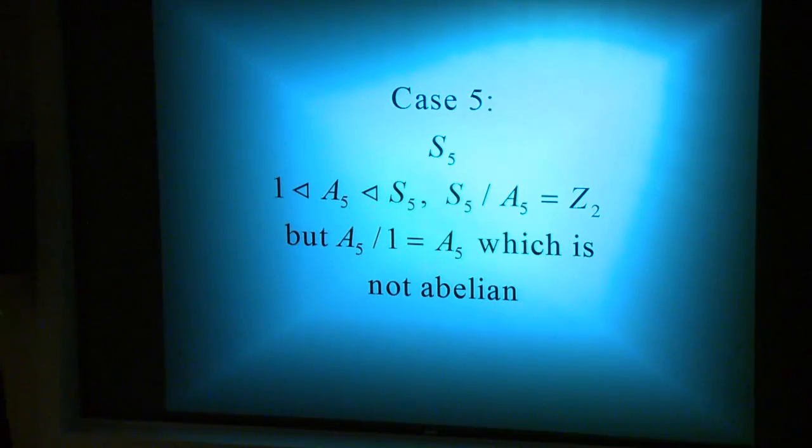Looking at the group for the unsolvable quintic, there's a discrepancy when compared to the properties of the previous cases. The quintic has a series of normal subgroups, but one of the quotient groups is not abelian. This is the difference between an unsolvable quintic and a solvable quartic.